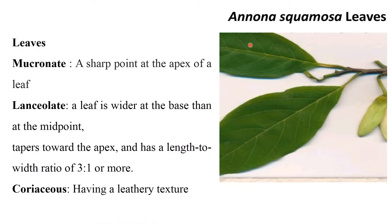Leaves are simple, alternate — you can see they are alternate — then exstipulate, petiolate, apex acute, obtuse or even mucronate. Mucronate means a sharp point at the apex of the leaf.